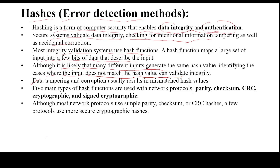There are five major methods of hash functions used with network protocols: parity check, checksum, and CRC, along with cryptographic and sign cryptography. These three methods — parity check, checksum, and CRC — are commonly used in the data link layer for detecting errors in the data.